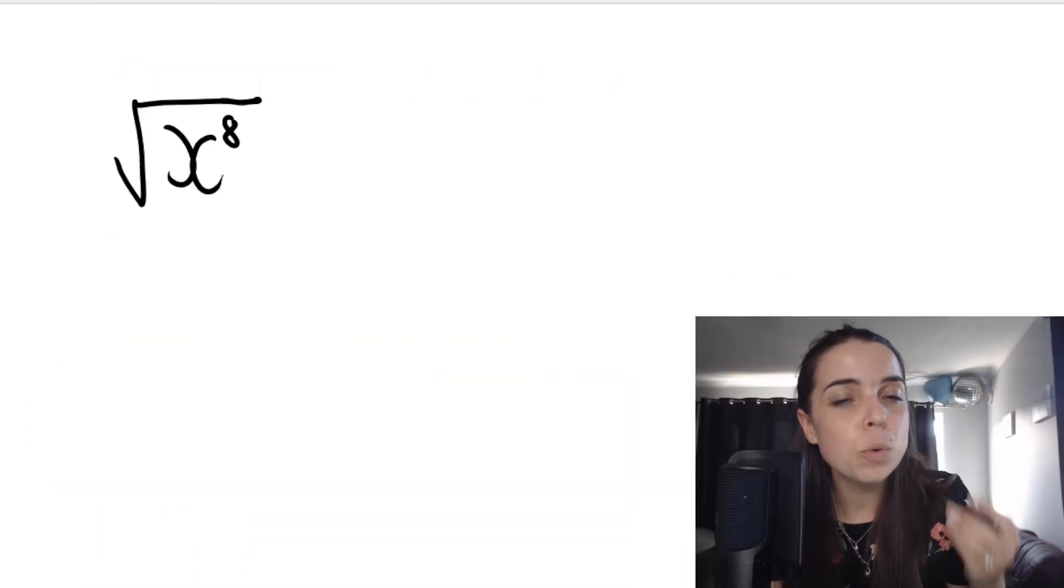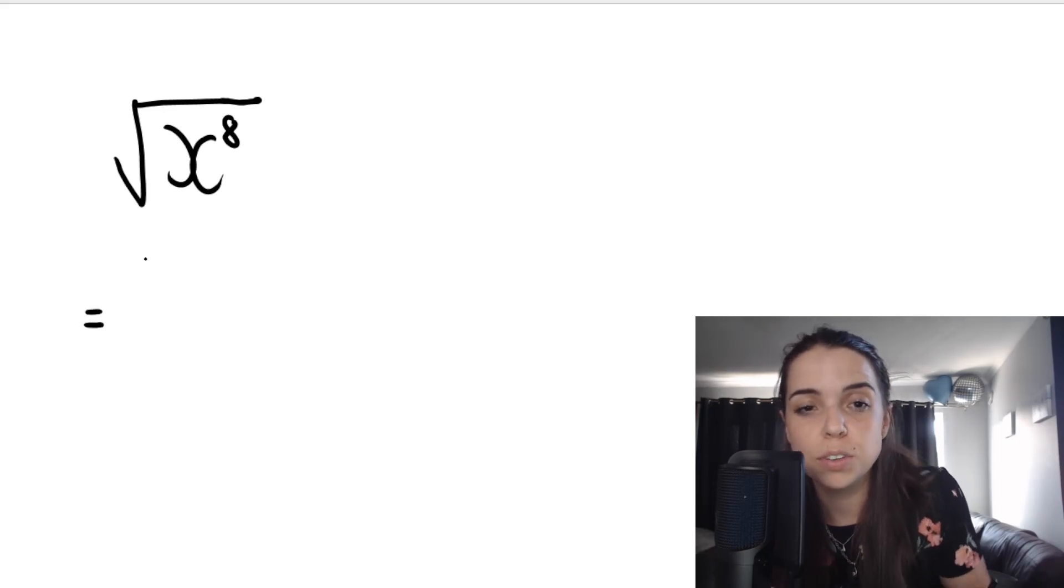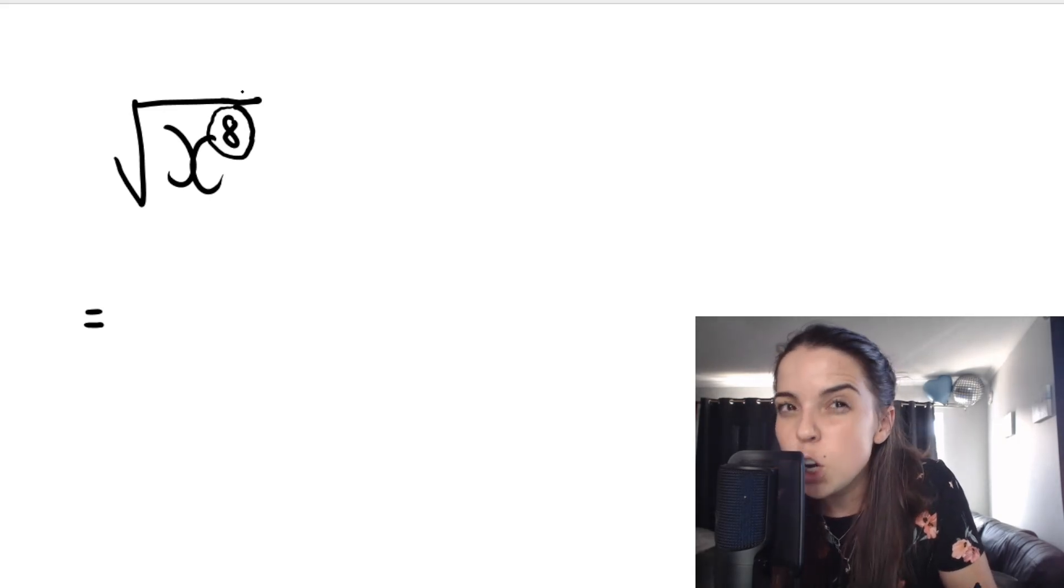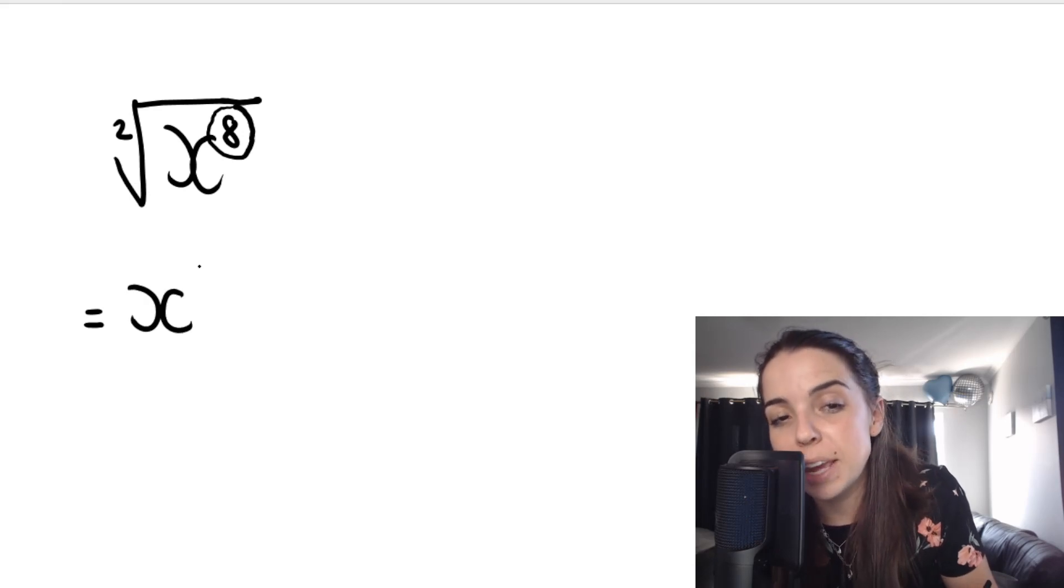Now in grade eight, nine, we would have taught you exponent laws as follows. You take this one over here, this exponent of eight, and you divide it by two. Why? Because this is square root. It's got a little invisible two there. So this is going to be x to the power of four.